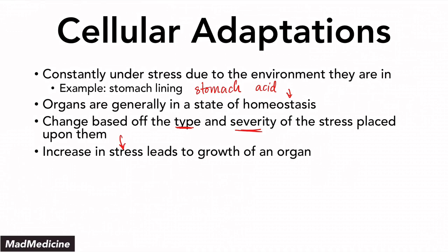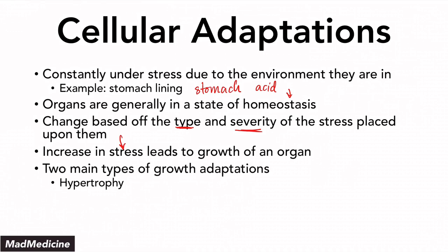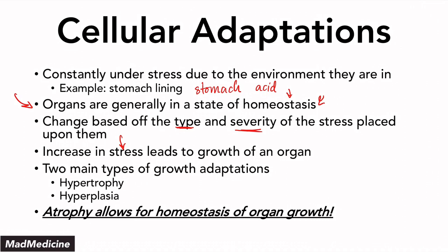When it comes to growth adaptations, you have two main types: hypertrophy and hyperplasia — we've discussed those in a previous lecture, so go ahead and check it out. But as far as growth is concerned, once an organ grows, eventually it has to shrink because it is in a state of homeostasis. And the way it accounts for growth and reverses growth is through atrophy. So let's discuss what atrophy really is.